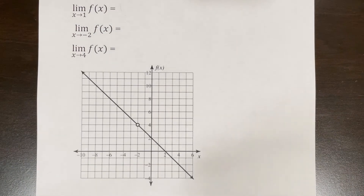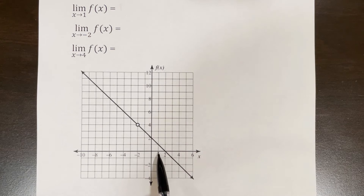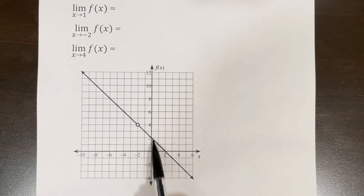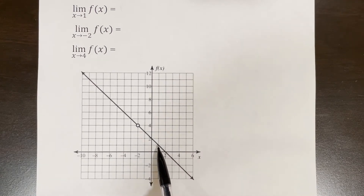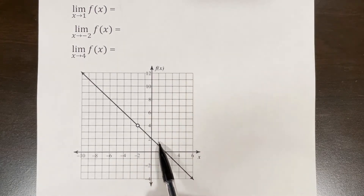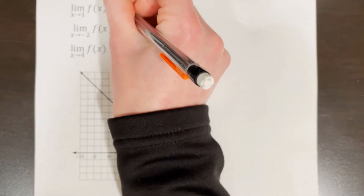In this example we're asked to evaluate the limit of f of x as x approaches 1. As x approaches 1 on this graph, y also approaches 1. From the left side it looks like it's going towards 1 and from the right side it also looks like it's going towards 1. That means that the limit of f of x as x approaches 1 is 1.